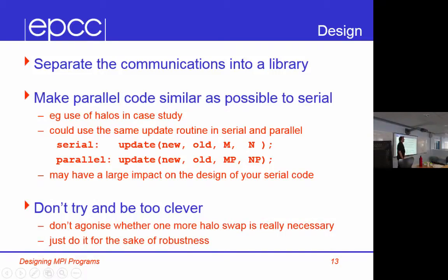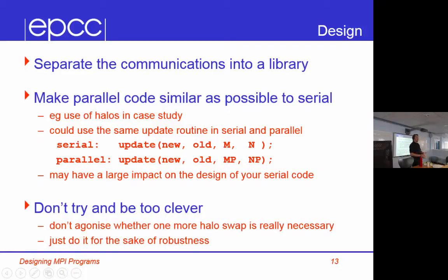Don't try and be too clever. I've seen codes where there's an iterative loop for 10,000 iterations and on the last iteration they skip the halo swap, saving themselves a microsecond. Six months later you come back and you assume the halos are up to date, but they're an iteration out of date and you get the wrong answer. Don't try and be clever from the start — just write code that works. Later on you can add hash ifdef clever or something, but don't agonize over small details.